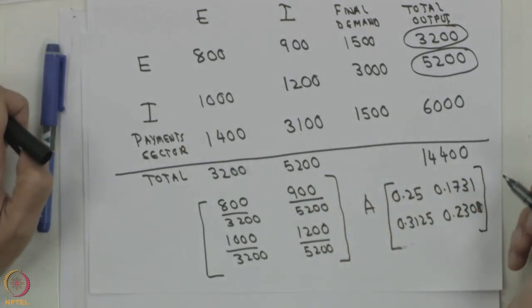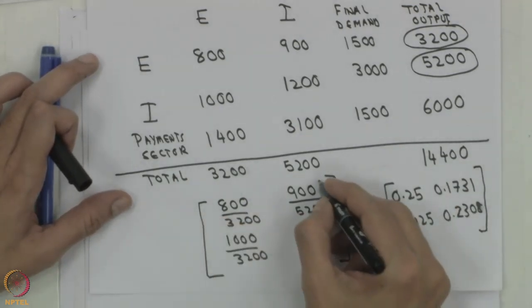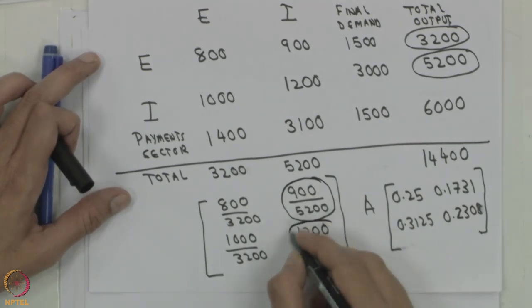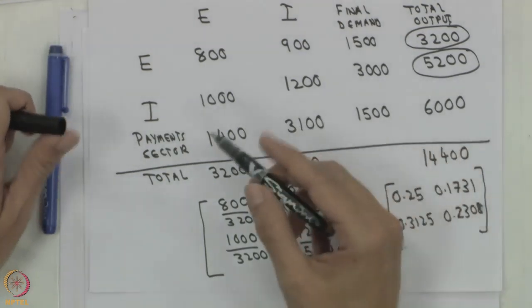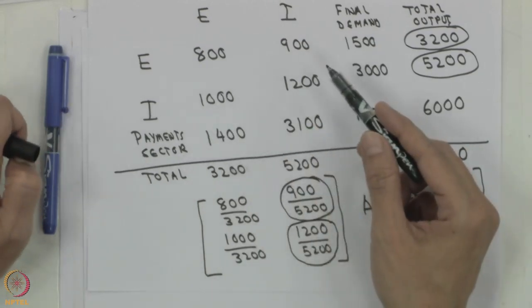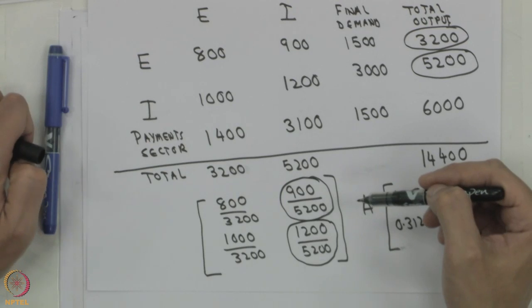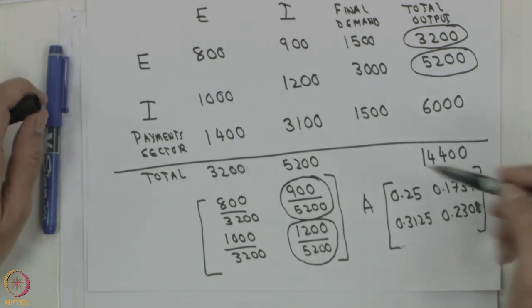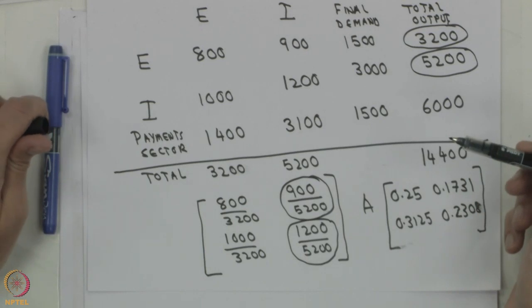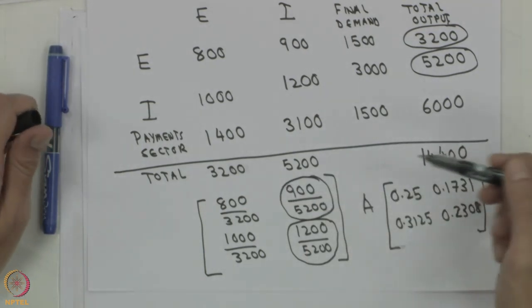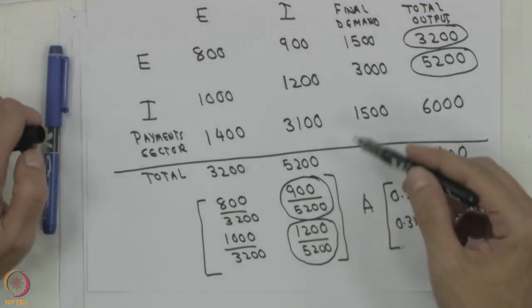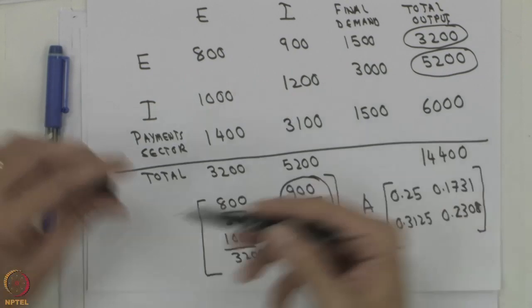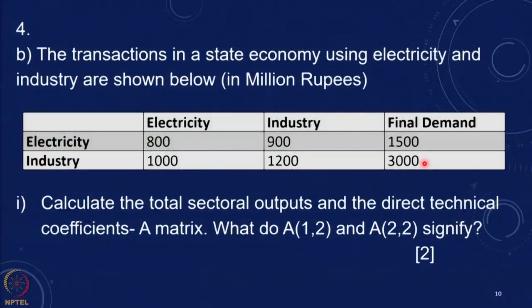What do A12 and A22 signify? A12 is the amount of electricity used per unit of industrial output — rupees per rupee of industrial value added — representing the electricity intensity of the industrial sector. A22 is the amount of industrial output used within the industrial sector itself.